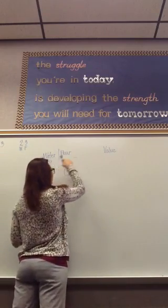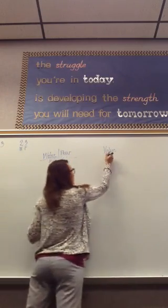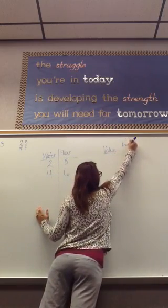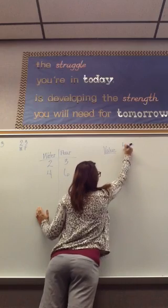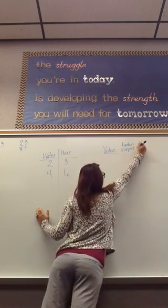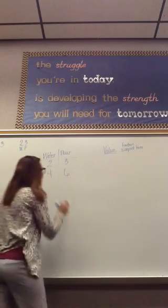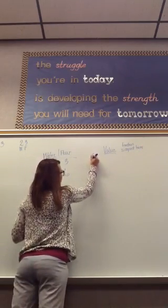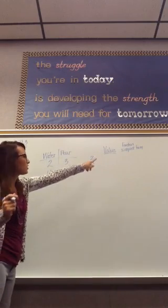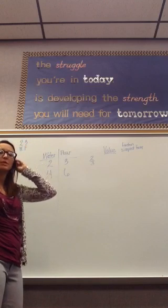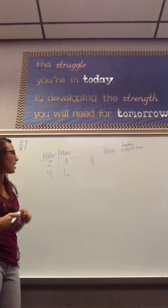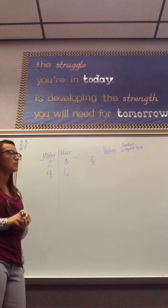So we have 2 to 3, and to find the value, we would put it in fraction form. And it must also be in simplest form. So 2 to 3 as a fraction would be 2 thirds. Now I know that I have it in fraction form, but I need to make sure that it's in simplest form. Think back to 5th grade or earlier lessons and how you would know if a fraction is in simplest form.